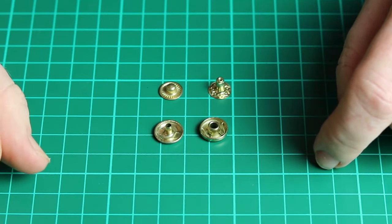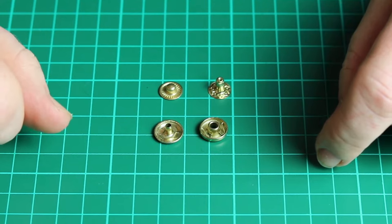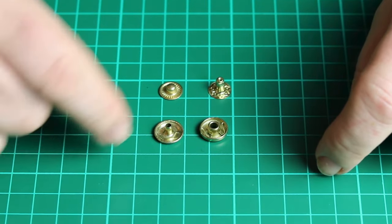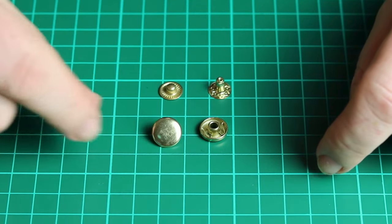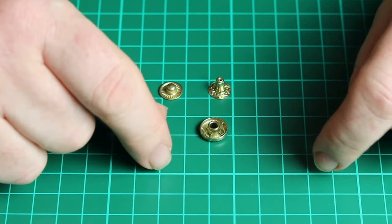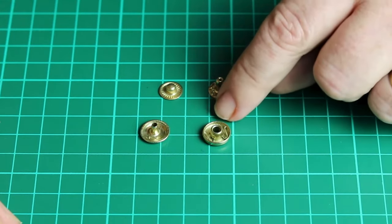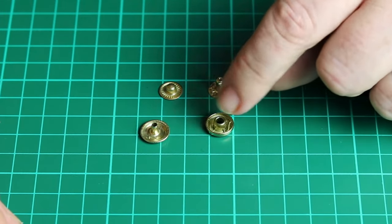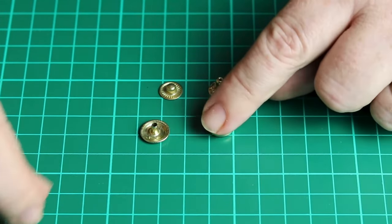Then we come to the press stud parts. Now each press stud comes in four parts. Firstly, we have the cap, which is easily recognizable because it's got a dome on one side. Then we come to the snap rivet. Again, easily recognizable—it's got a little M-shaped clip inside it to snap it into place.